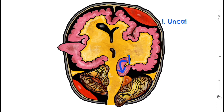The next type of herniation, indicated by arrow two, is called central herniation. This is when the diencephalon and parts of both temporal lobes are pushed through a notch within the tentorium cerebelli. Downward herniation in this manner can stretch the basilar artery and can cause it to tear, leading to a particular type of subarachnoid bleed called a Duret haemorrhage.